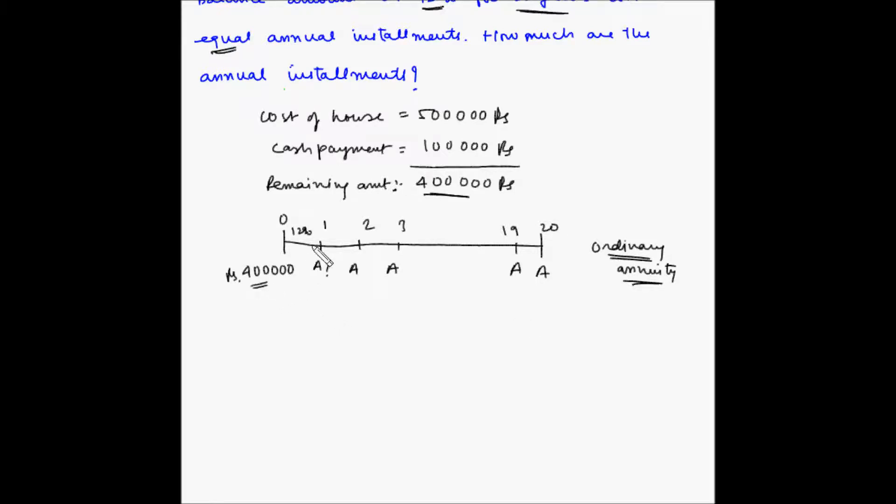So we have the present value, we have the value of i, and we need to find the value of A. We have the value of n, which is the tenure. Now there are multiple methods of solving this: we can use the formula for present value of an ordinary annuity, or we can use the financial calculator. All these methods have been discussed in the previous videos.